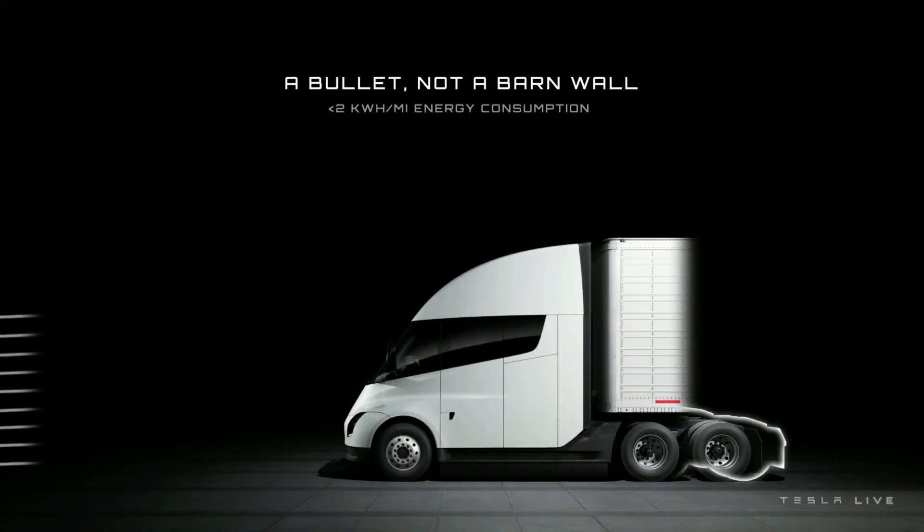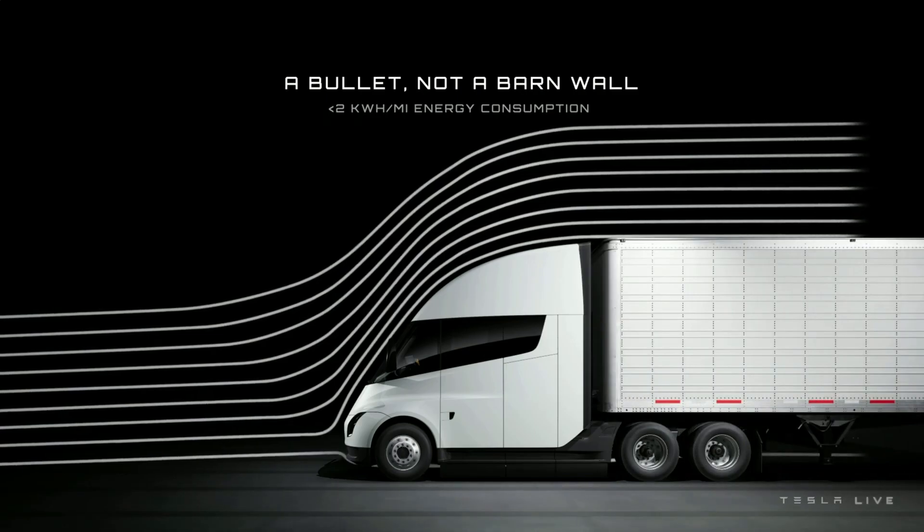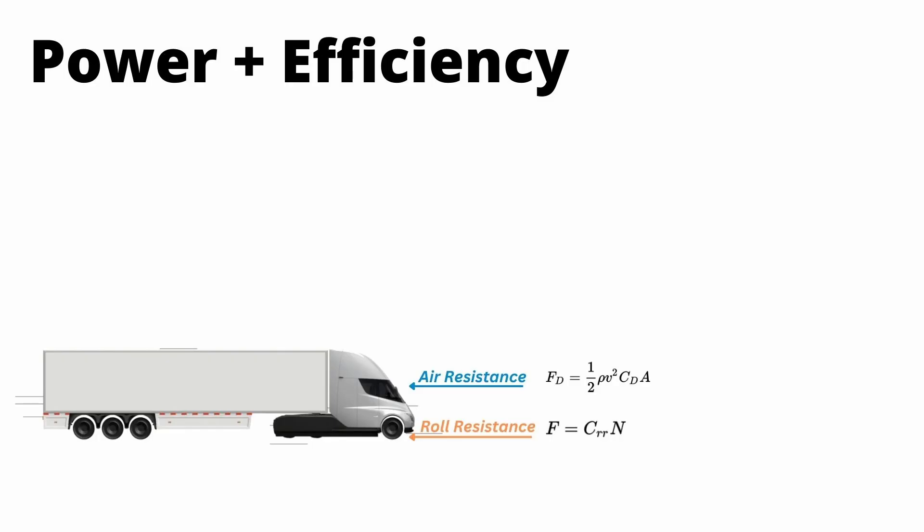So let's start by using the characteristics of the truck to calculate the theoretical power required to move it down the road. The two forces that act on the truck are air resistance and rolling resistance. You can see the equations below, which might not make much sense yet.